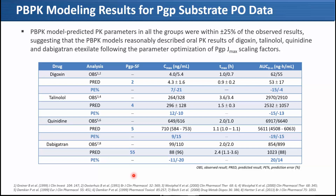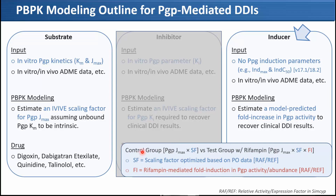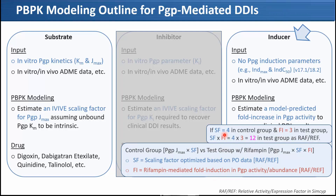Now I'd like to talk about the inducer. We did not use P-gp induction parameters like IndMax and IndC50. What we did instead was: in the control group we already estimated the scaling factor. Then in the test group with rifampin, we multiplied the scaling factor by the fold induction — the rifampin-mediated fold induction in P-gp activity or abundance. For example, if the scaling factor is 4 in the control group and we assume a fold induction of 3, we multiply 4 by 3 to get 12 and use 12 as the Jmax scaling factor in the test group.